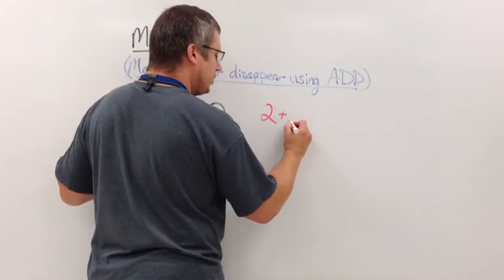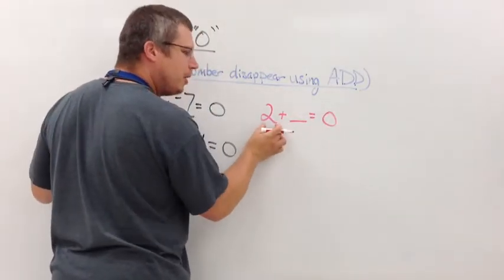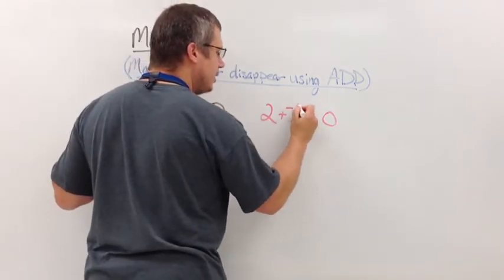Two. Plus what gets me zero? What can I add to make this number completely disappear? Two plus its opposite. Negative two.